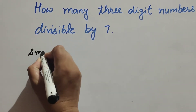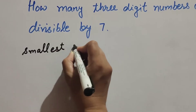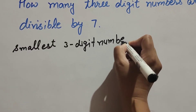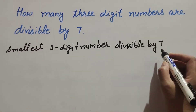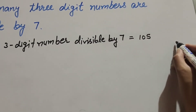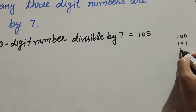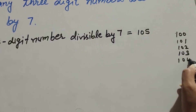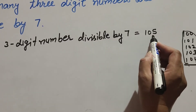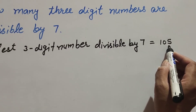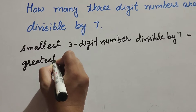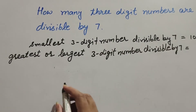The smallest three-digit number divisible by seven is 105. Three-digit numbers start from 100, then 101, 102, 103, 104 — these are not divisible by seven. So the smallest three-digit number that is divisible by seven is 105.